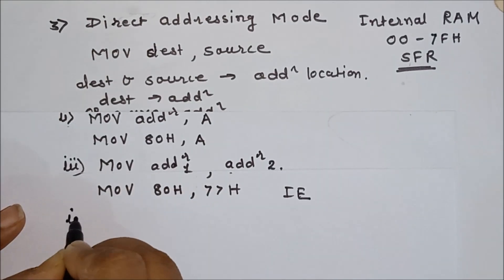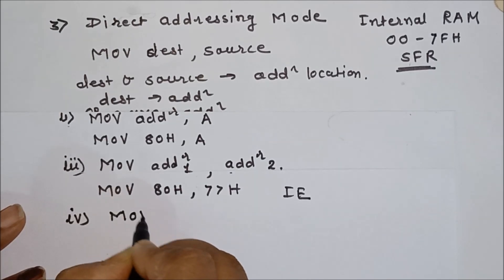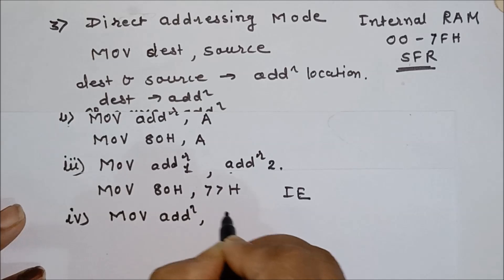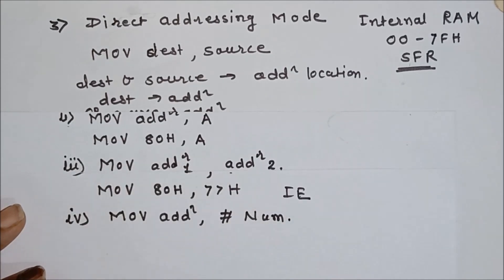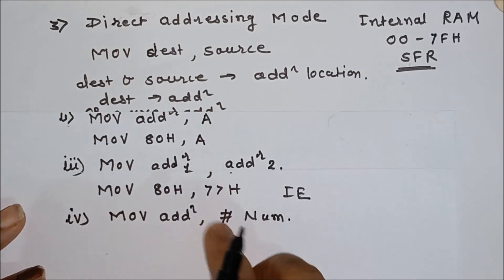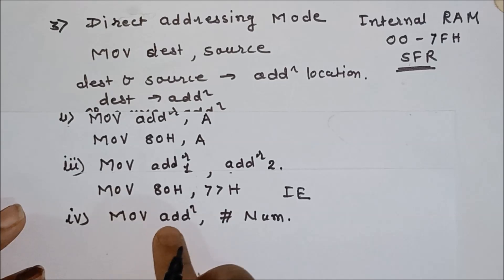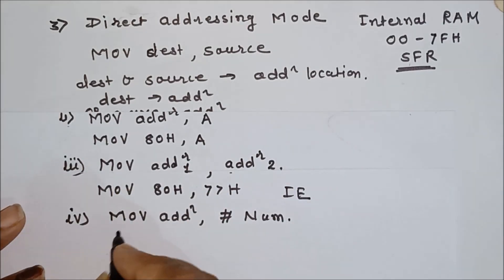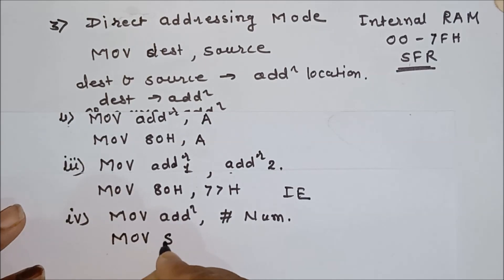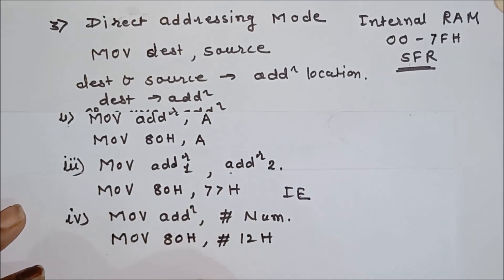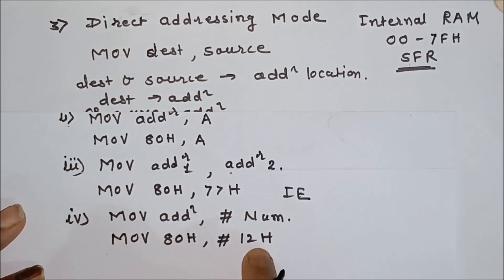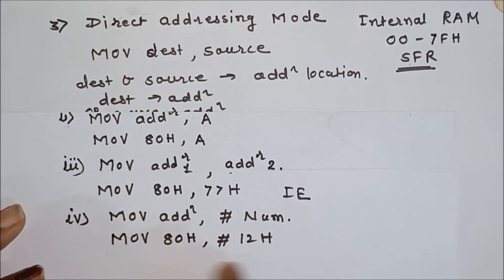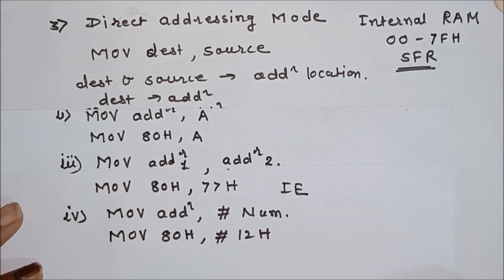Another type of direct addressing mode instruction is: MOV address, #immediate_number — where the destination is an address and the immediate number is the source. Note that an immediate number can never be used as a destination. For example, if I want to send data 12H to Port 0, I write: MOV 80H, #12H. So 12H will be placed on Port 0, since 80H is the address of Port 0.